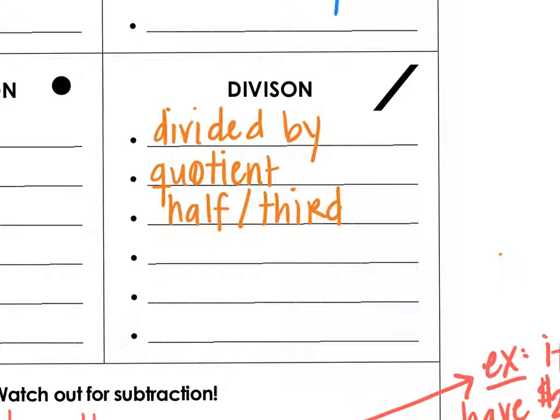There's not too many words for division, but you do have divided by, quotient means division. To half something means to divide by 2, to third something divided by 3, also quarter, quarter of something is divided by 4. These are all words that indicate division.